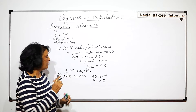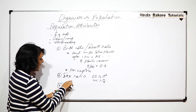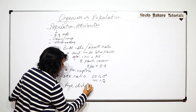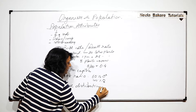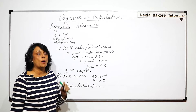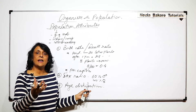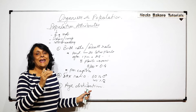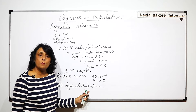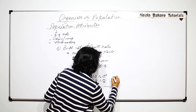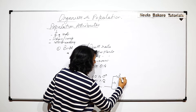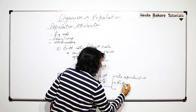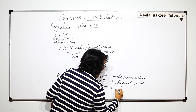The third attribute is age distribution. This is also a population attribute. Age distribution means in that given population, how many individuals fall into which particular age bracket. The population has been divided into three age brackets: pre-reproductive, reproductive, and post-reproductive.